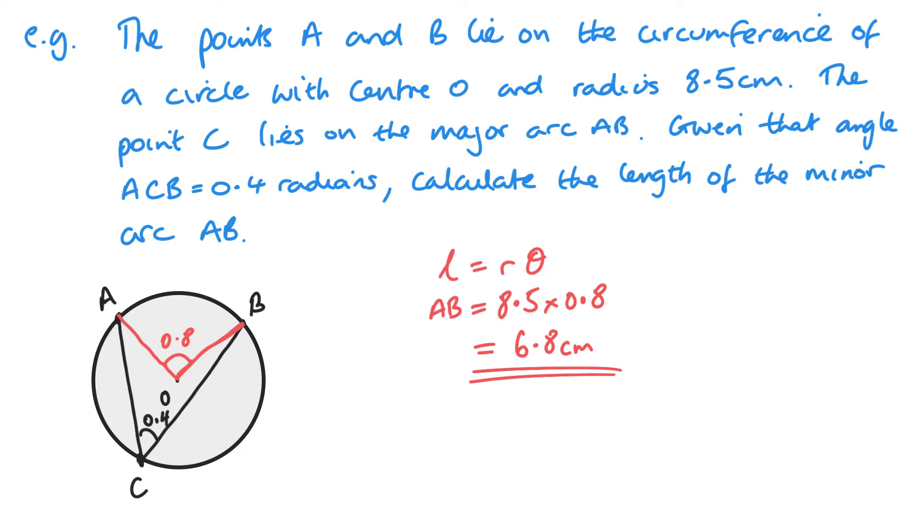So with that in mind now I'm able to work out the minor arc of A and B. So my formula is L equals R theta. Always write down the formula because it helps you remember it. Now I'm just putting in what we know, a radius of 8.5 and an angle of 0.8, and then we get 6.8 centimeters. Now this wasn't a difficult question, but the sketch or the diagram is what helps. And you have to remember that all of your GCSE or IGCSE is assumed knowledge.